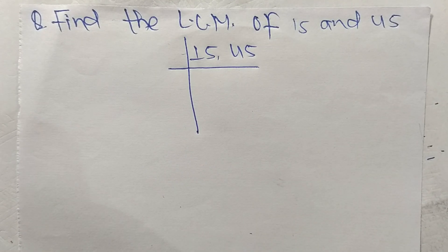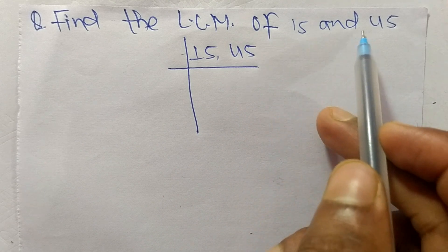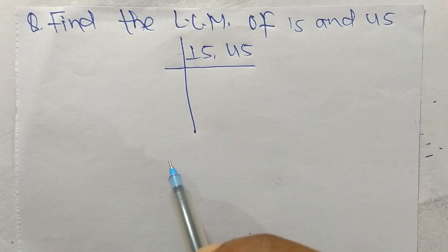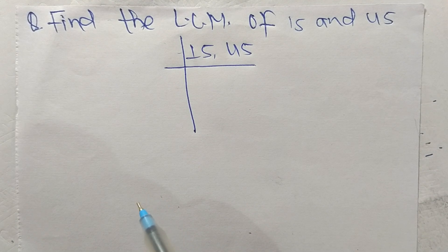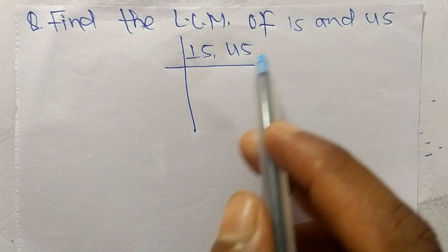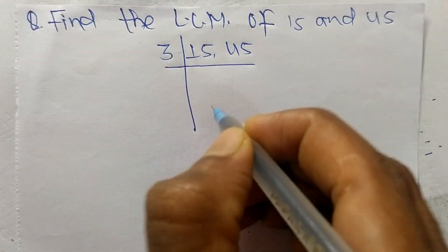Today in this video we shall learn to find the LCM of 15 and 45. To find LCM, first we have to choose the lowest number that can exactly divide 15 and 45. So the number is 3.